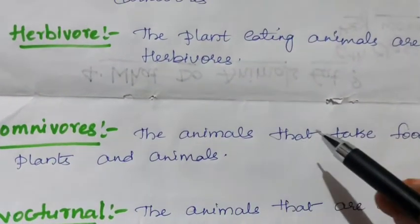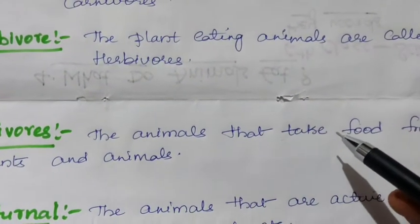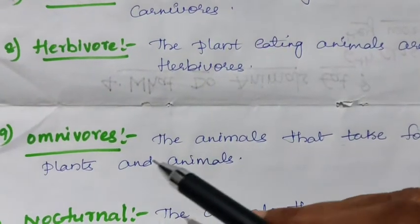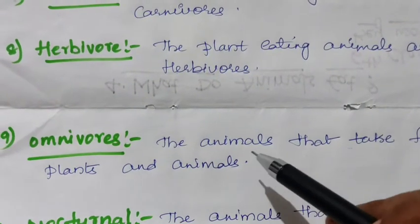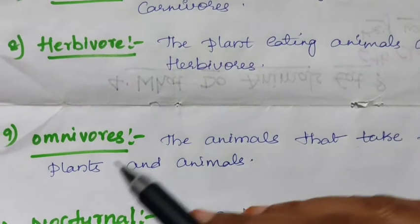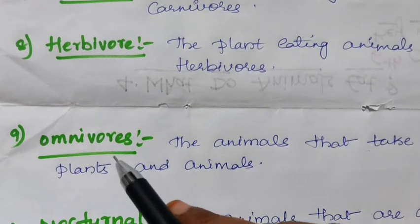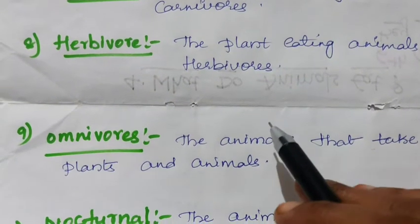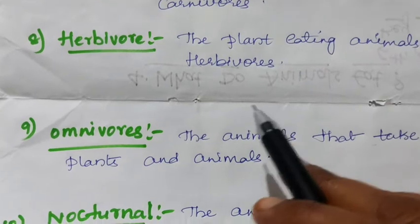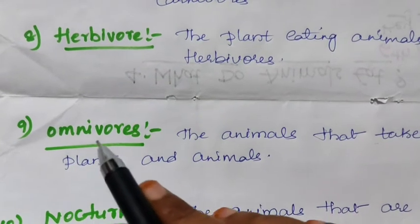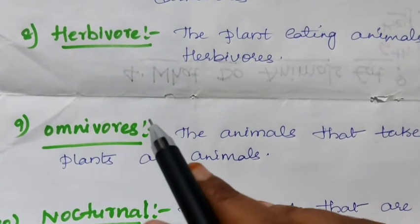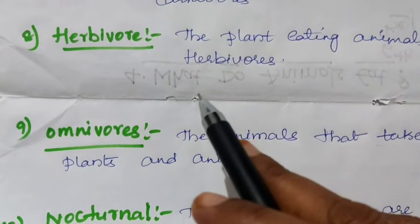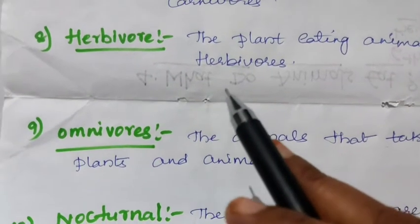Omnivore: animals that take food from both plants and animals are called omnivores. Examples of omnivores include crow, bear, and human beings.